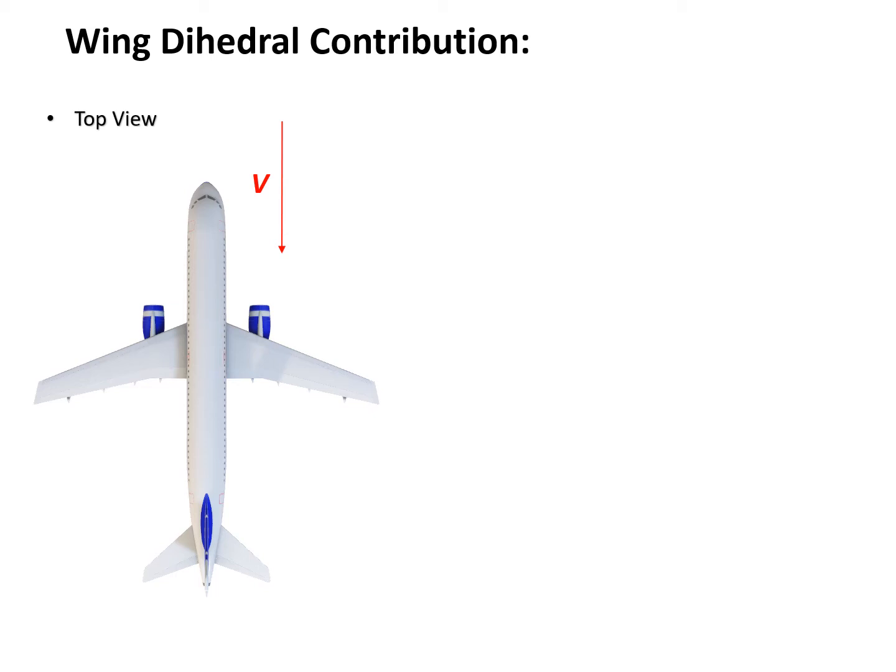Now let's see how we can derive the wing contribution to Cl_beta. We see an aircraft in a top view, flying straight upward, and relatively the wind is blowing towards the aircraft with speed V, which is the true airspeed. Now what happens is there will be a sideslip velocity.